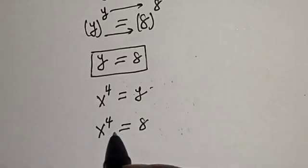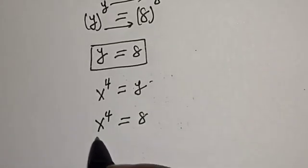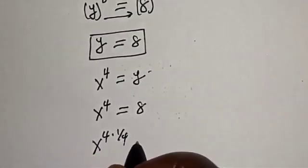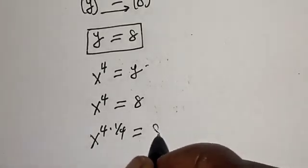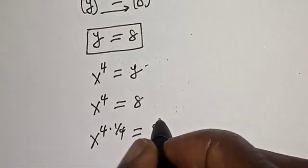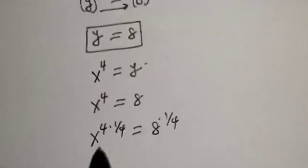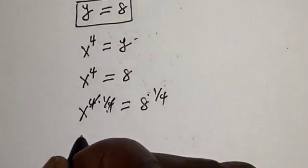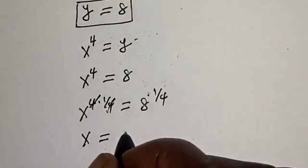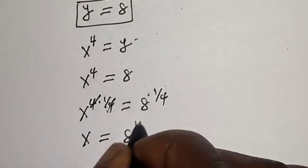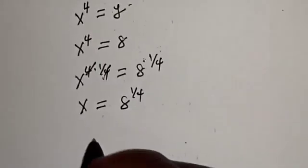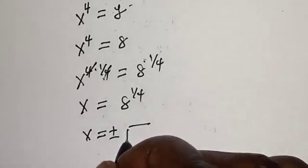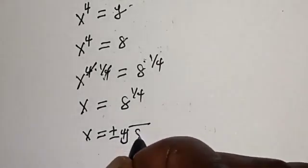Now let's raise both sides to the power of 1 over 4. That is s raised to power 4 multiplied by 1 over 4 is equal to 8 raised to power 1 over 4. The 4 and 1 over 4 cancel, so s is equal to 8 raised to power 1 over 4, which is plus or minus the fourth root of 8.